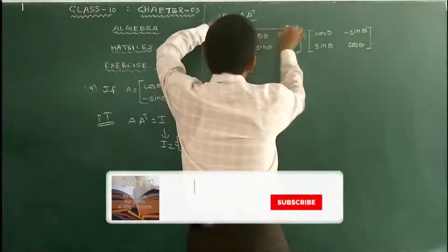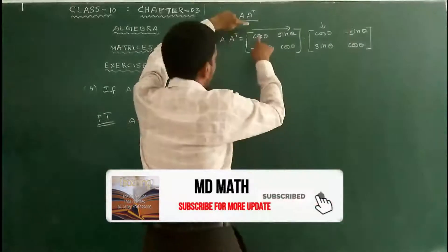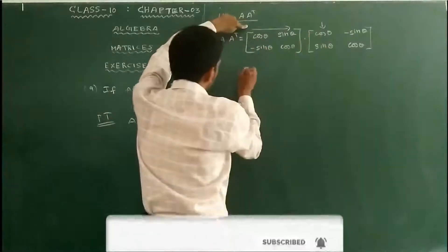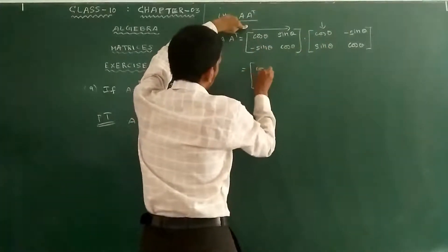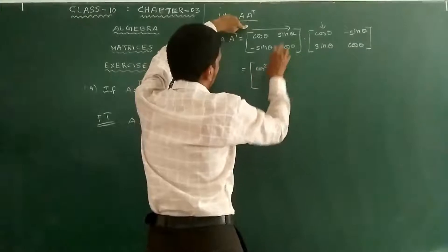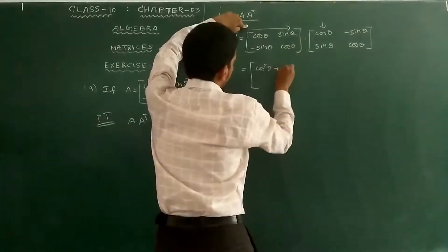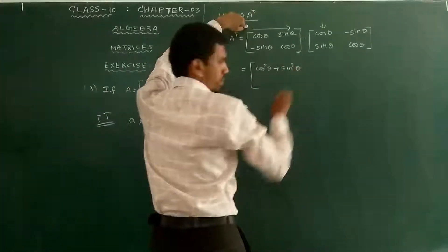Now computing A into A transpose. For the first row and first column: cos θ into cos θ gives cos²θ, and sin θ into sin θ gives sin²θ. So the (1,1) element is cos²θ + sin²θ.